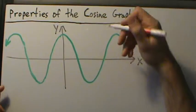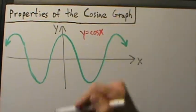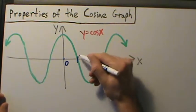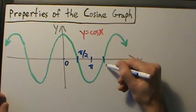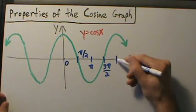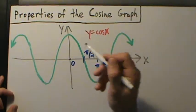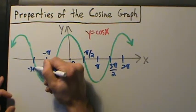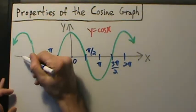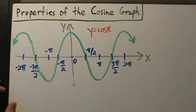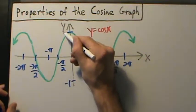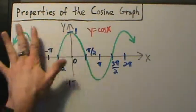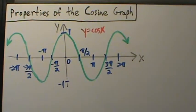This is y equals cosine of x. Let's label some points: here x equals 0, this is π/2, here's π, this is 3π/2, and this right here is 2π. Going in the negative direction: negative π/2, negative π, negative 3π/2, and negative 2π. The important y-values are negative 1 down here and positive 1 up here. That's the graph of our cosine function.